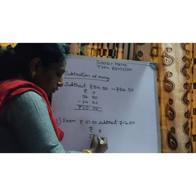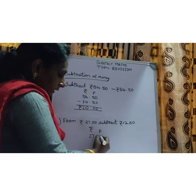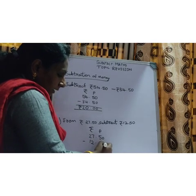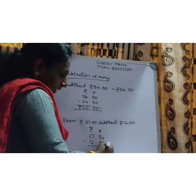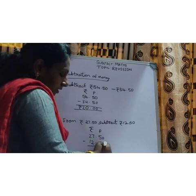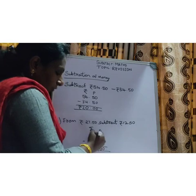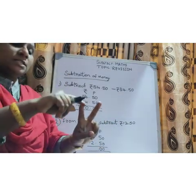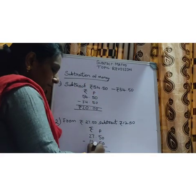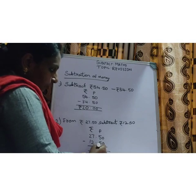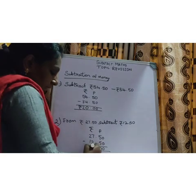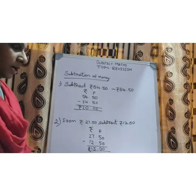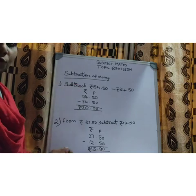Write 27 below the rupees symbol and 50 paise below paise. Write the minus sign, then 12 rupees and 50 paise. Now subtract: 0 minus 0 is 0, 5 minus 5 is 0, keep the dot. 7 minus 2 — 7 in your mind, count back 2 — gives 5. 2 minus 1 is 1. Don't forget to keep the decimal point and write the rupees sign.